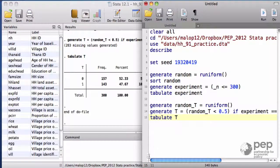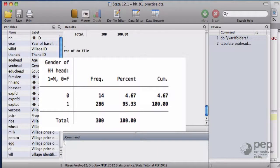Let's take a look to the gender issue in our sample. Tabulate gender of the household head, and we see that there's only 5% of the households where the head is a woman.